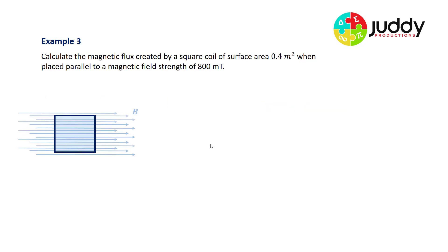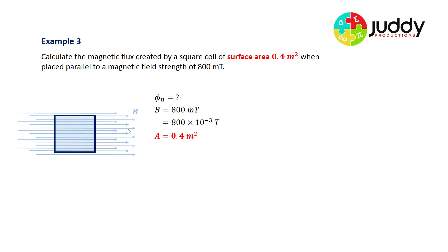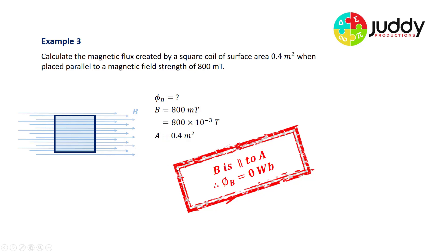Example three: calculate the magnetic flux for a square coil of surface area 0.4 m² placed parallel to a magnetic field strength of 800 milli-tesla. Because the magnetic field is parallel to the surface area of the coil, there are no field lines threading through it, therefore the magnetic flux is zero weber. This is a trick question that comes up on VCAA papers regularly.